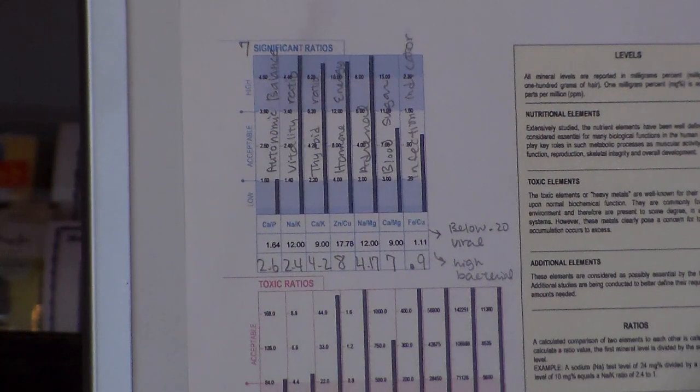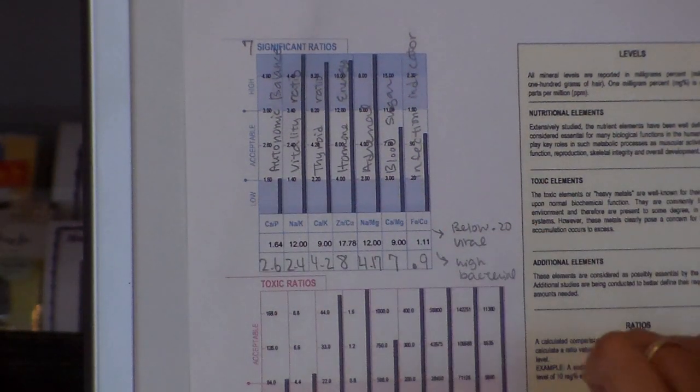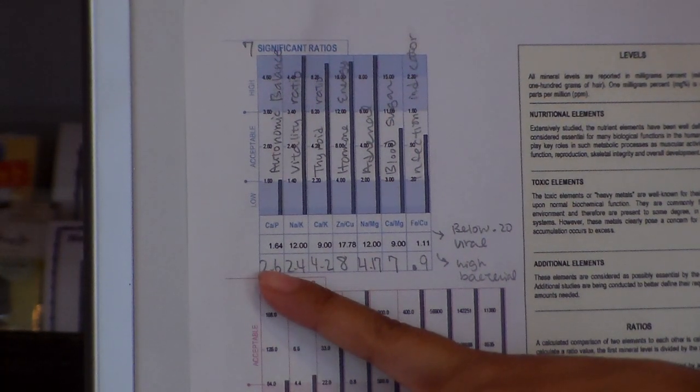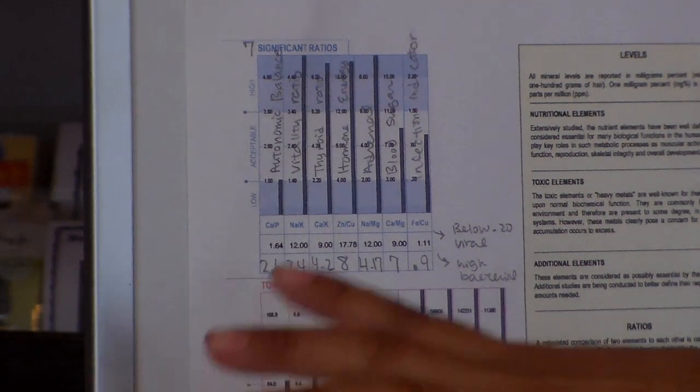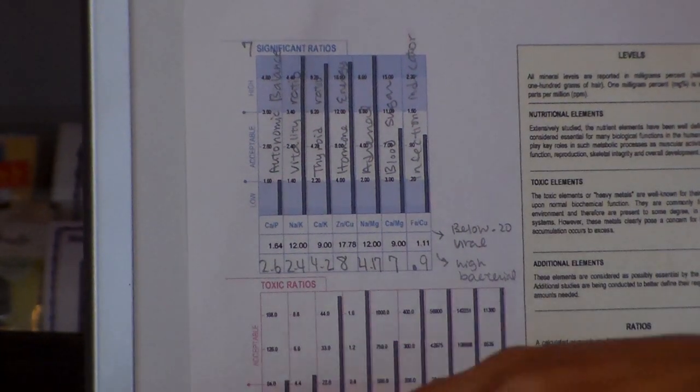On the second page of the report, you'll see seven significant ratios. The calcium-phosphorus ratio would be your autonomic balance, so that's fight or flight, sympathetic or parasympathetic, which is the rest and digest.